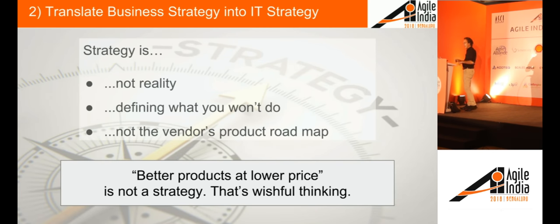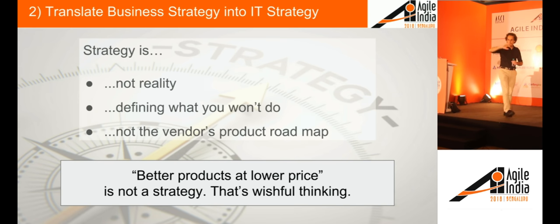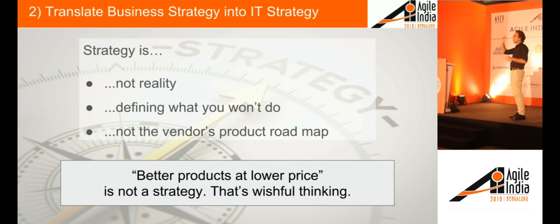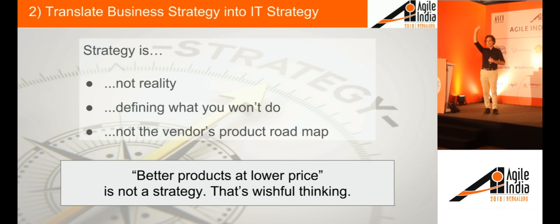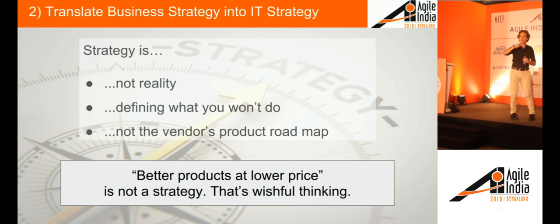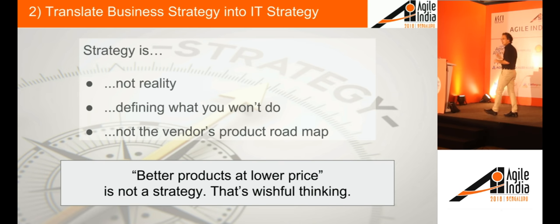Now you need to translate that business strategy into an IT strategy. The most important thing about a strategy is it's not reality — it's a direction you want to go. If I say I'm going to package my applications in containers and somebody says my application can't be containerized, that does not invalidate the strategy. It's a direction, a vision, a goal you drive towards. It's not something that's supposed to be 100% reality immediately.